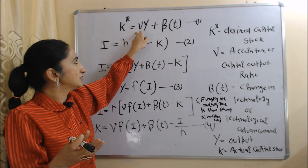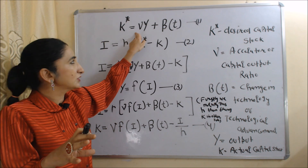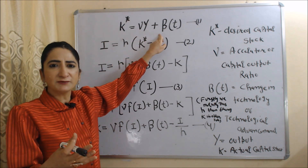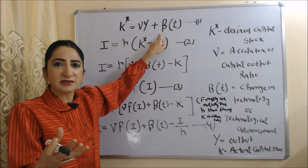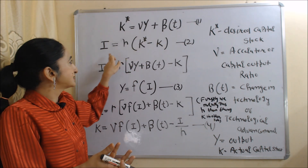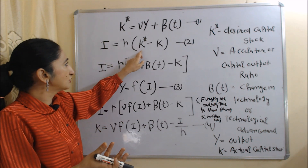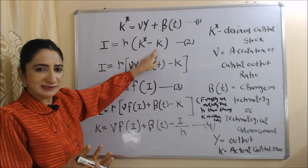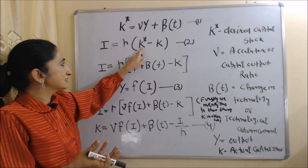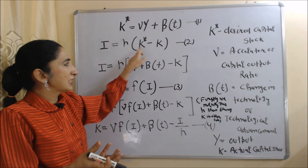According to this equation, how much capital we desire depends on capital needed for output and capital needed for technological improvement. Obviously, when we improve technology, we need capital. The second equation is: I = λ(K* − K). Here, I is investment, K* is desired capital stock, K is actual capital stock.